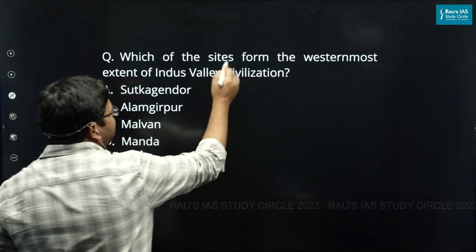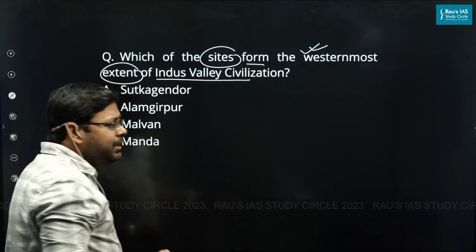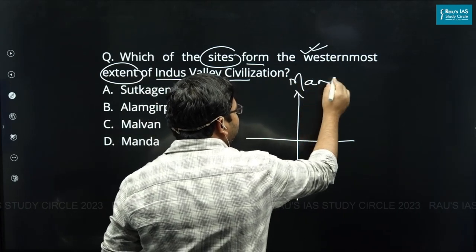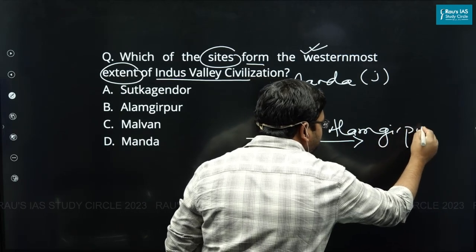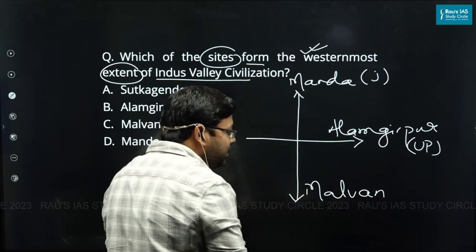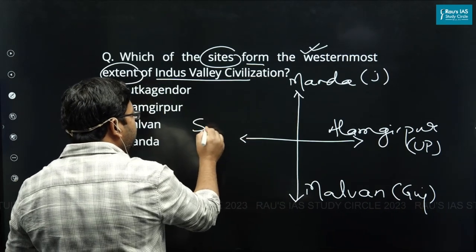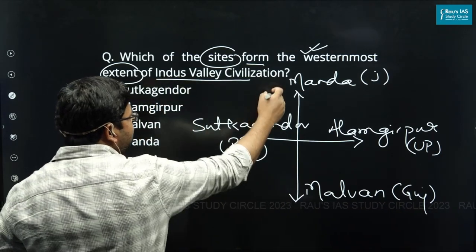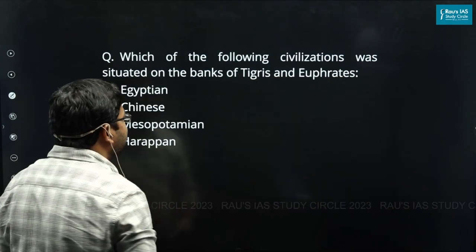The first question asks: which site forms the westernmost extent of the Indus Valley Civilization? If we talk about the extent of IVC, the northernmost site is Manda in Jammu, the easternmost site is Alamgirpur in UP, the southernmost site is Malwan in Gujarat, and the westernmost site is Sutkagendor, which is in Pakistan.